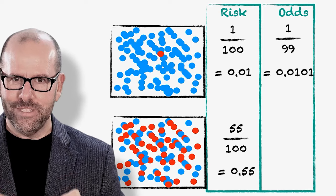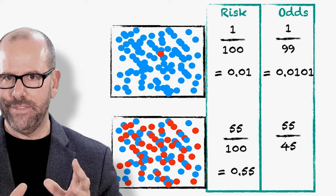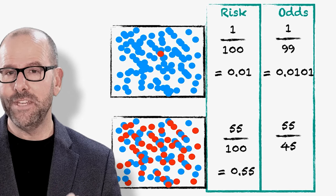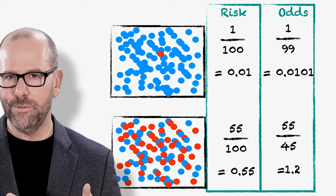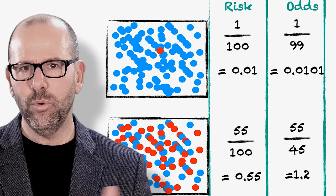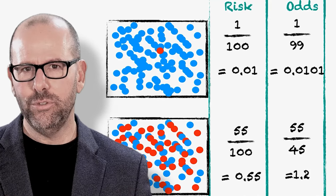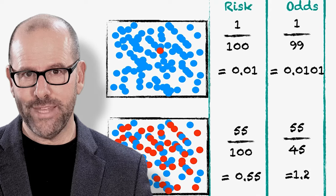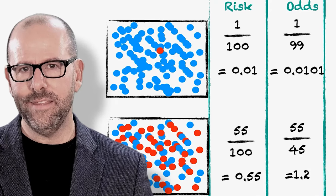The odds of sneezing, however, are 55 over 45. 55, the number of people who sneezed, 45, the number of people who didn't sneeze. And that's 1.2. Now, we said about odds, if the odds are more than one, then it's more likely that you sneezed than you didn't. And that's true in this case, the odds are 1.2. So for any person going to that cinema for that period of time, it's more likely that they would have sneezed than they wouldn't have.